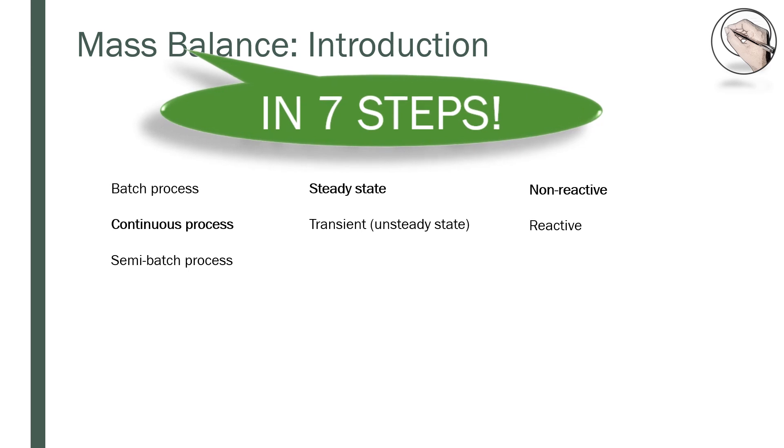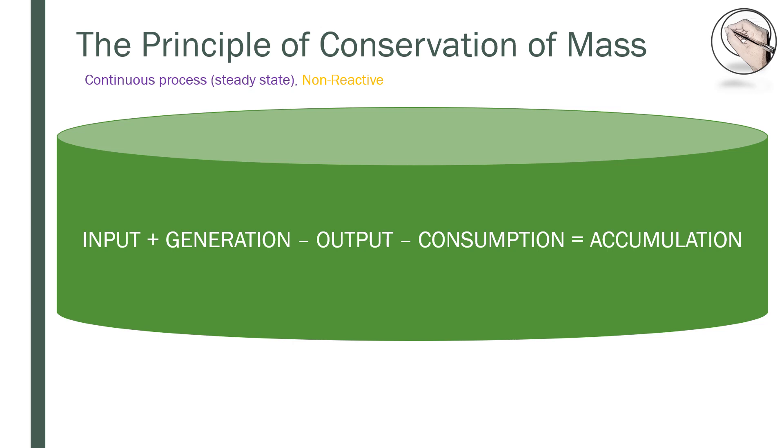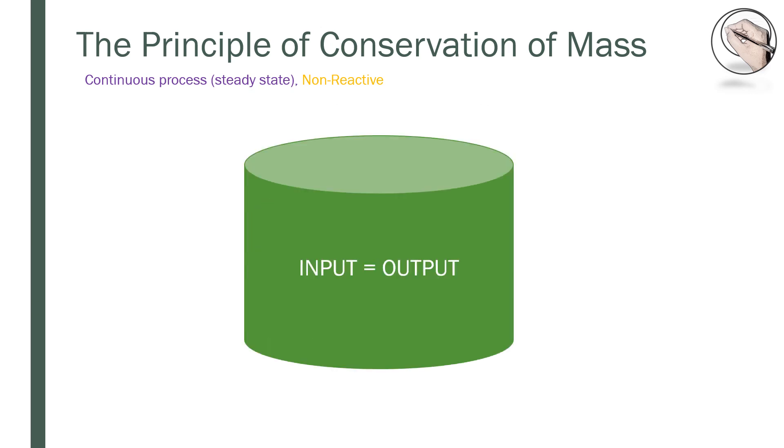For any material balance application you need to apply the principle of conservation of mass, which states that accumulation equals input plus generation minus output minus consumption. For a continuous process, which is always at steady state, there is no accumulation because what goes in goes out. When there is no reaction taking place, there is no generation of outputs or consumption of inputs. That leaves us with input equals output, which means that the mass and the moles must balance around the system.